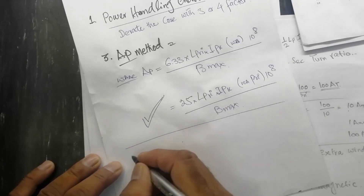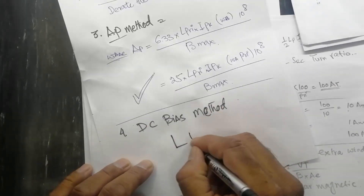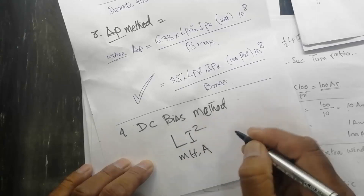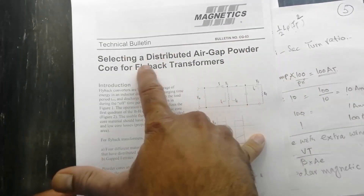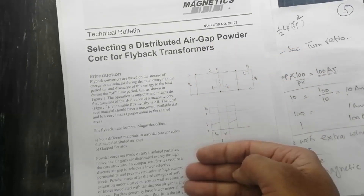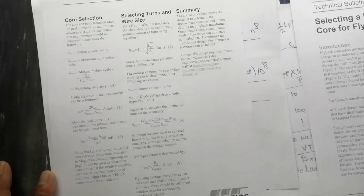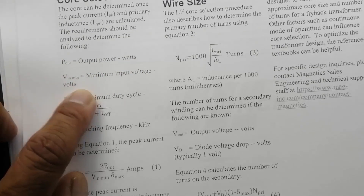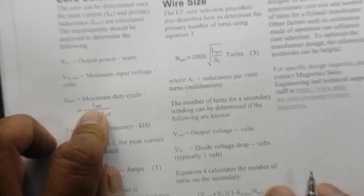Another very useful technique for flyback core selection is the DC bias or LI² method, where L is in millihenry. Magnetics Inc. provides guidelines for this method in their technical bulletin. For core selection method 3, the key inputs are: P-out (output power in watts), V-in minimum — in our case 100V — B-max, and maximum duty cycle D-max, which in our case is 48 percent.